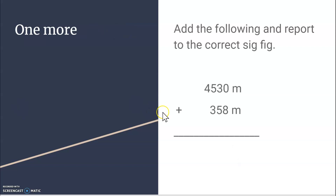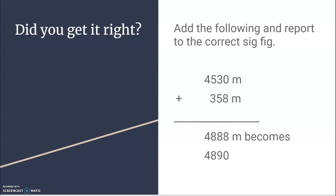One more. Add the following and report to the correct number of significant figures: 4530 plus 358. Pause the video and see if you get it right. Normally it adds up to 4888 meters, but I have to round to the tens place because 4530 only goes to the tens place while 358 goes to the ones place. What's after the tens place? An eight, so I round up to 4890 meters.